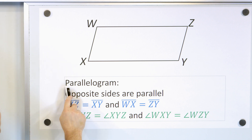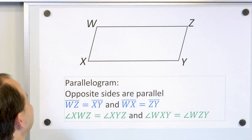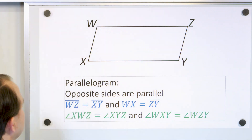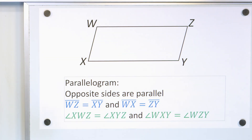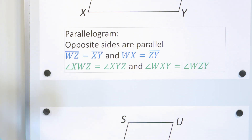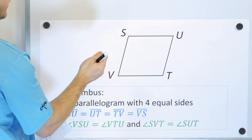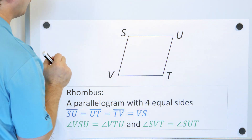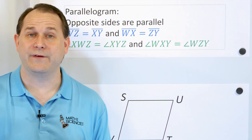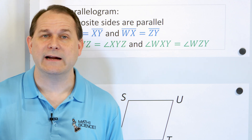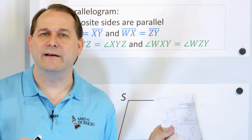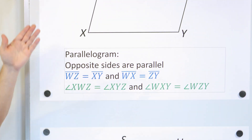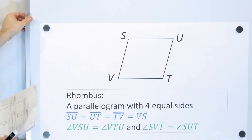All right, we have a parallelogram. You can think of it as a slanted rectangle — it looks like a rectangle, but it's slanted. Next, we have a rhombus. It looks really similar, but you can think of a rhombus as a slanted square. Remember, a square is a figure that has four equal sides. A rhombus is a slanted square. So we have a slanted rectangle and we have a slanted square.